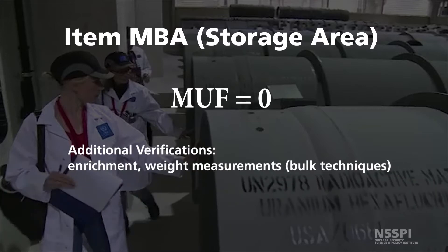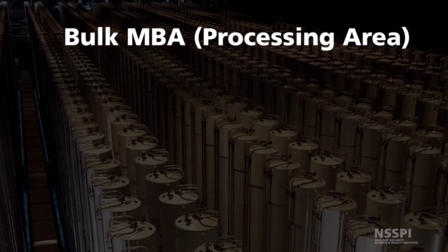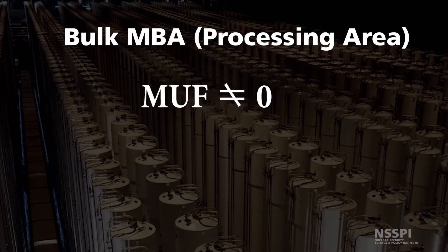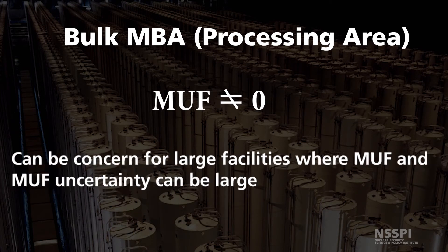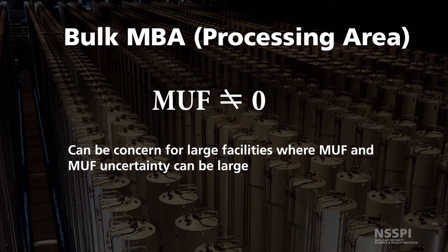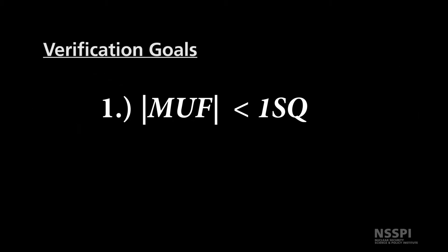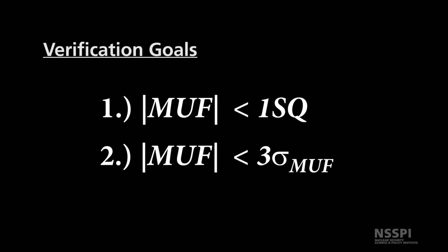Even in the storage area, occasionally the inspectors can verify the contents of randomly selected UF6 cylinders by performing enrichment and weight measurements. For the processing MBA, however, the expected MUF will be non-zero because bulk accounting is used. This is a concern for large facilities where the MUF and MUF uncertainty values correspond to large quantities of material. The inspector will independently verify that the MUF is less than 1 SQ to meet the first verification goal. The inspector then performs an analysis of MUF and MUF uncertainty, or sigma MUF, and verifies compliance with the second verification goal to ensure that the calculated MUF value is less than 3 sigma MUF.